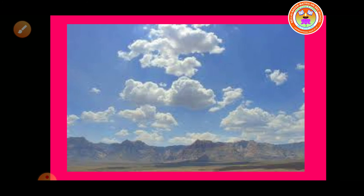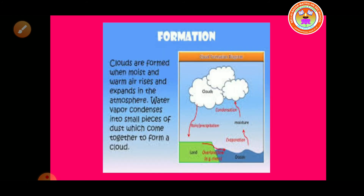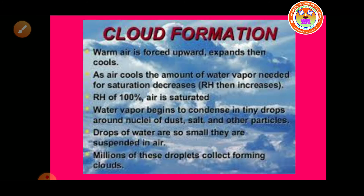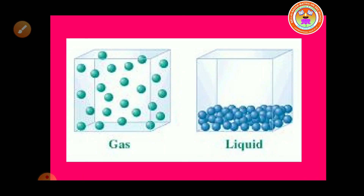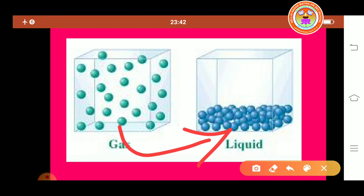Condensation is the formation of clouds. Clouds are an example of condensation. When water vapor cools, it turns back into liquid to form clouds in the atmosphere. So formation of clouds is the example for condensation. In the condensation process, gas is converted into liquid.